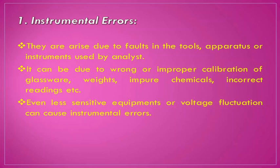The first one is called instrumental error. As the name itself suggests, these arise due to faults in the tools, apparatus, or instruments used by the analyst — the person who is performing the experiment. If the instruments are faulty, then instrumental error occurs. It can also be due to wrong or improper calibration of glassware, weights, impure chemicals, incorrect reading, etc.